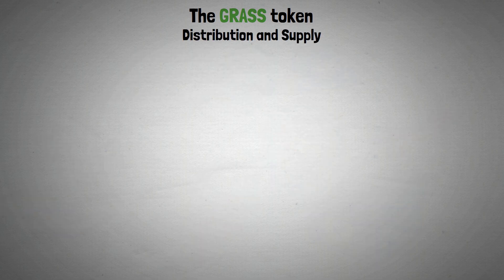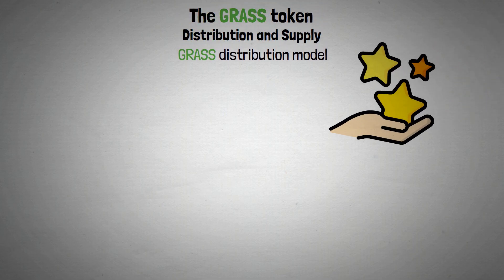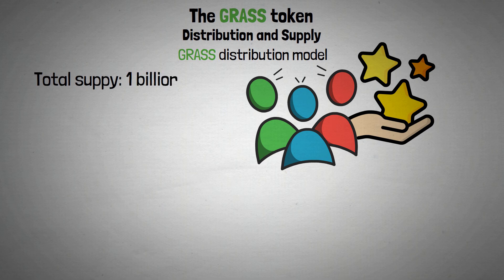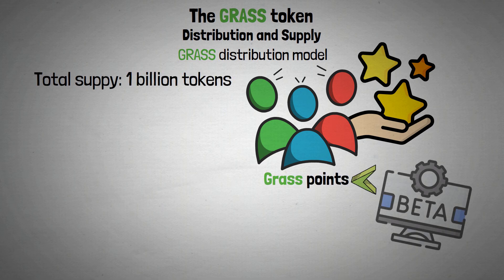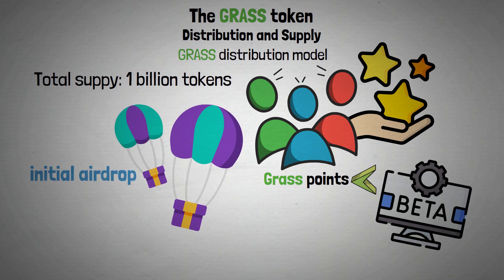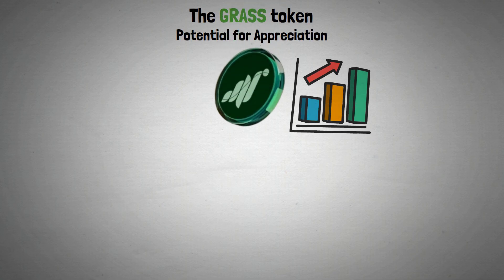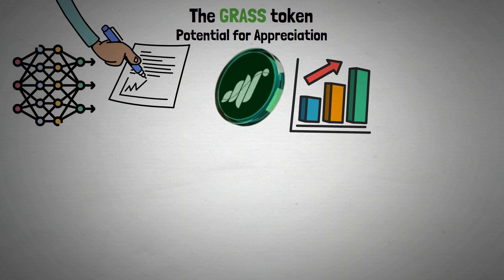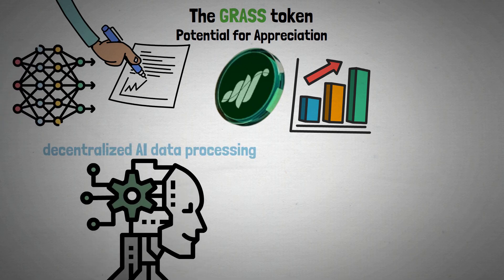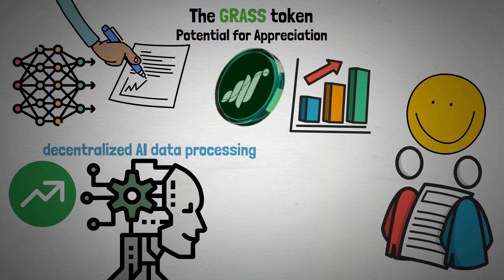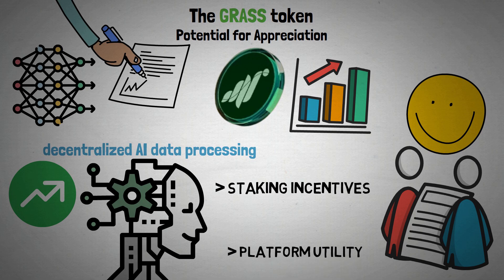Distribution and supply: the GRASS distribution model will reward early adopters and active contributors with a total supply of 1 billion tokens. Users who earned GRASS points during the platform's beta period will receive rewards from the initial airdrop. The value of GRASS tokens may rise as more people sign up for the network and as the need for decentralized AI data processing grows, with staking incentives and platform utility offering a positive long-term outlook.